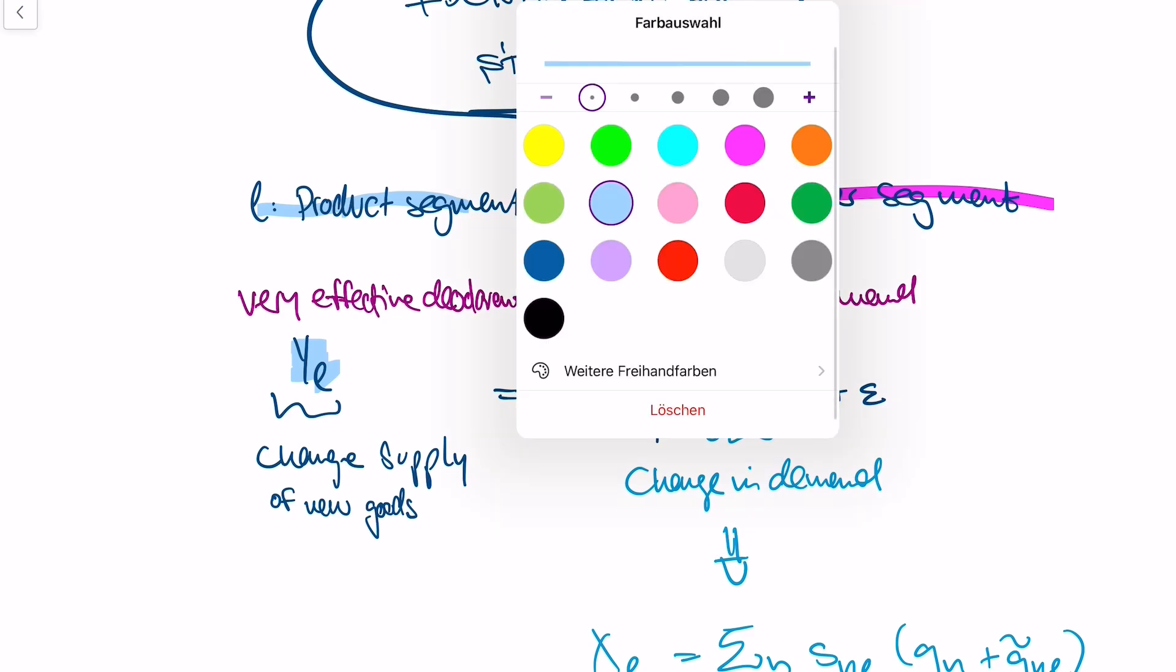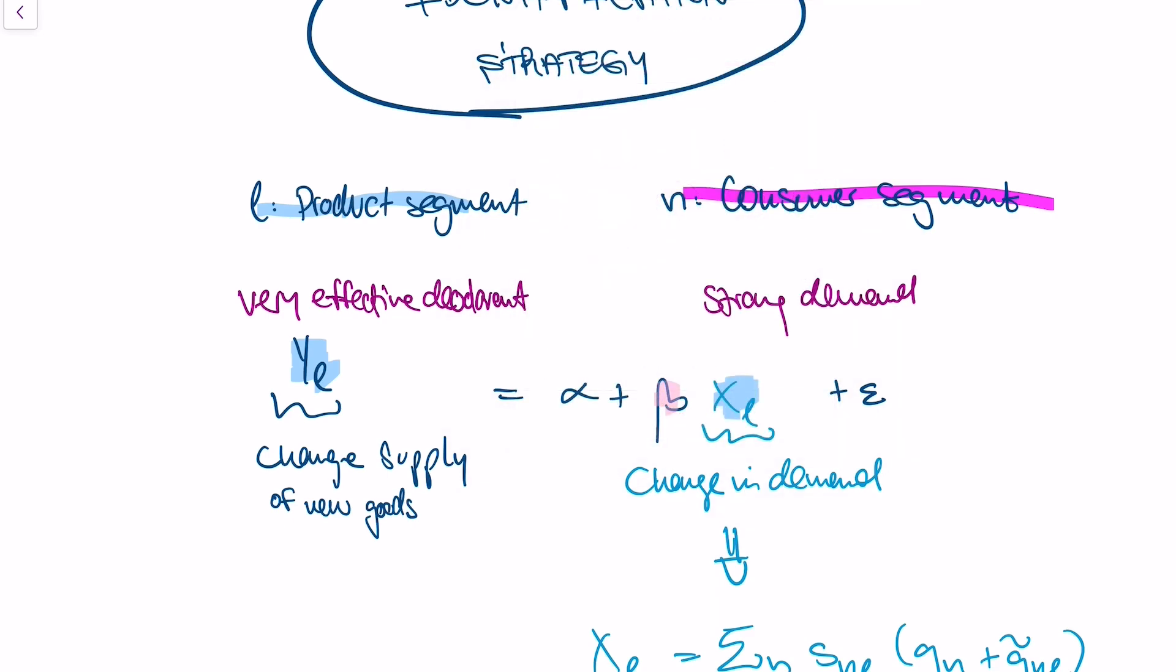And what are we interested in? Well, we're interested in the coefficient - how strong does demand drive my supply? And what is the obvious problem with this equation? Well, the obvious problem is that we don't know if demand drives supply or if supply drives demand.